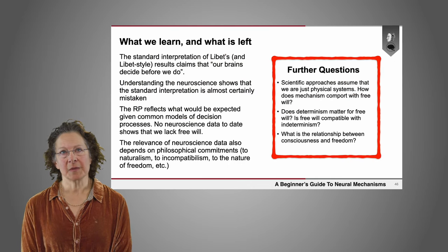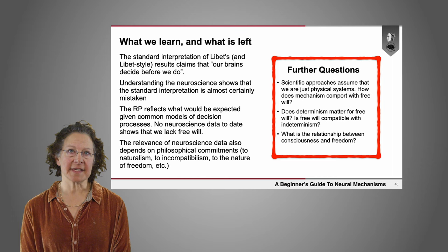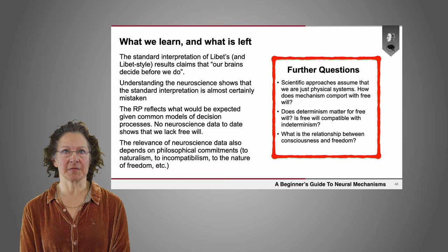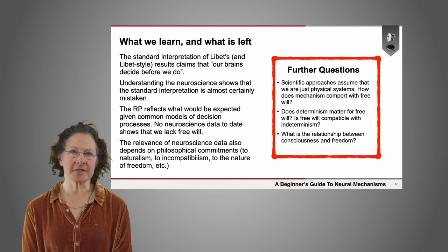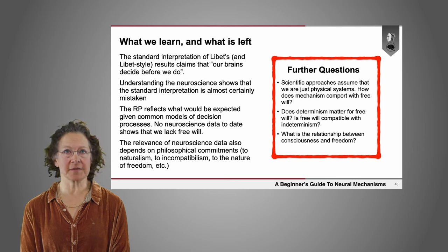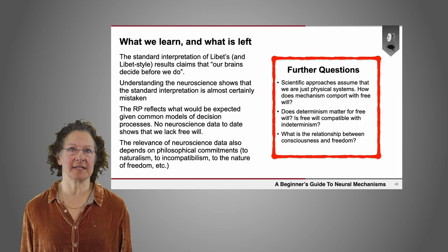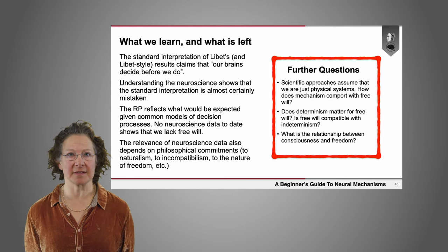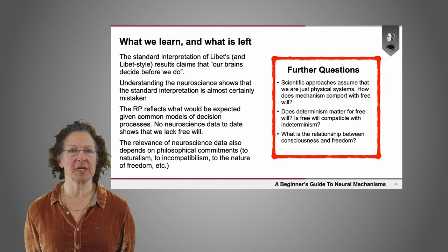What do we learn from this alternative interpretation of Libet's experiments? The standard interpretation claims that our brains decide before we do. But understanding the neuroscience and modeling shows that the standard interpretation is almost certainly mistaken. Rather, the RP reflects what we would expect to see given common models of decision processes. And so far, no neuroscience data to date shows that we lack free will.